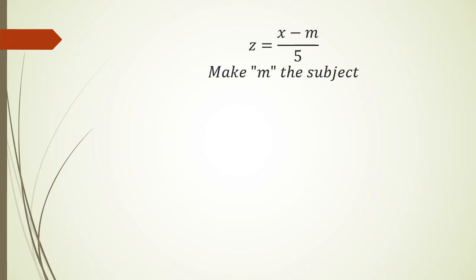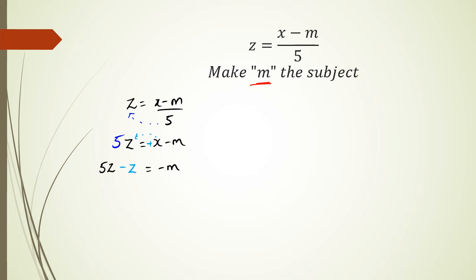Last example: z = (x − m) / 5 — make m the subject. Multiply both sides by 5: 5z = x − m. Rearranging x to the other side — since x has no symbol we assume it's positive, so it becomes negative — giving 5z − x = −m. It's important to note the question asks for m, not negative m.